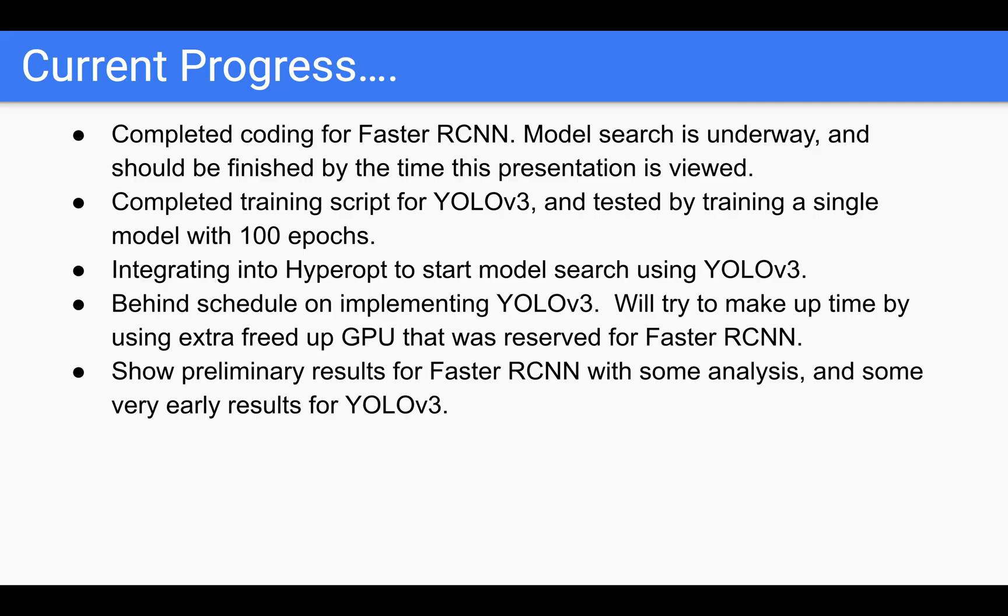Current project status. At this point, I've completed the coding for Faster RCNN. Model search is currently underway and should be finished by the time this presentation is viewed. I've completed the training script for YOLO V3 and managed to do testing and actually produce one single model trained with 100 epochs. I'm actually in the process of integrating this into Hyperopt to start model search using YOLO V3. I am a bit behind schedule for YOLO V3, but hopefully I'll try to make up some extra time with the extra freed up GPU I have at home that's currently reserved for Faster RCNN. I have two GPUs working on YOLO V3 and try to get the same number of trials as Faster RCNN. For today, I'll be able to show preliminary results for Faster RCNN as well as some analysis and some early results of YOLO V3.